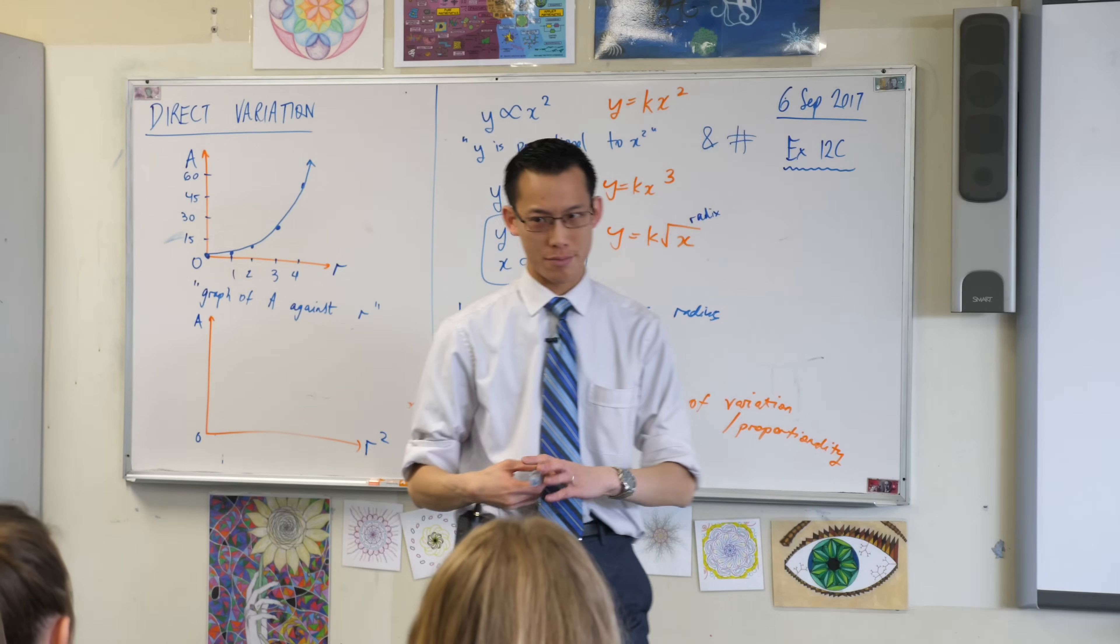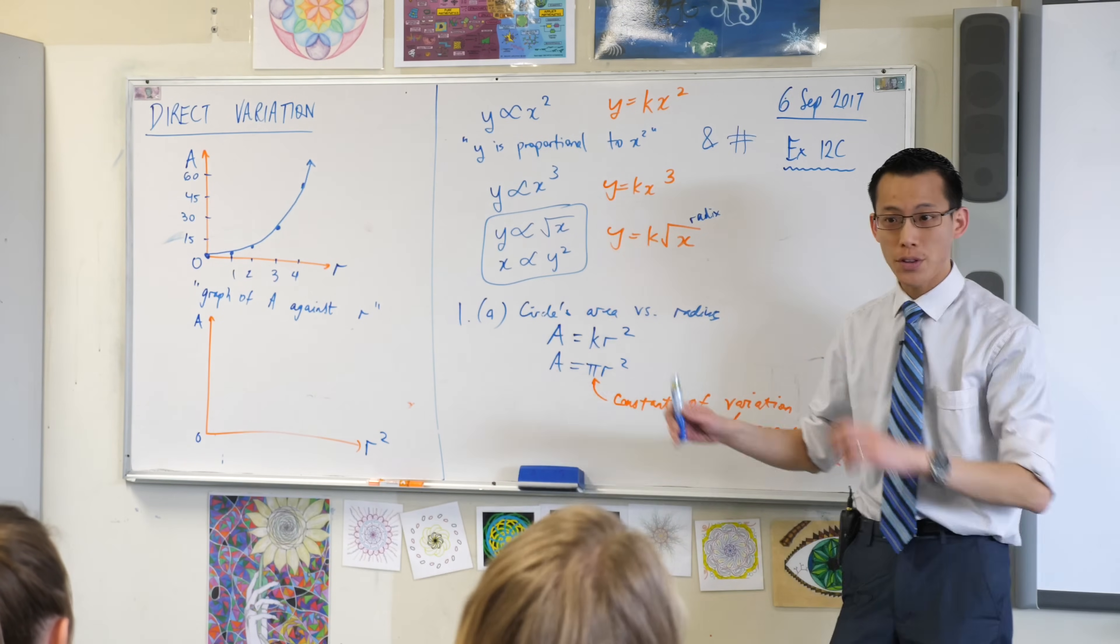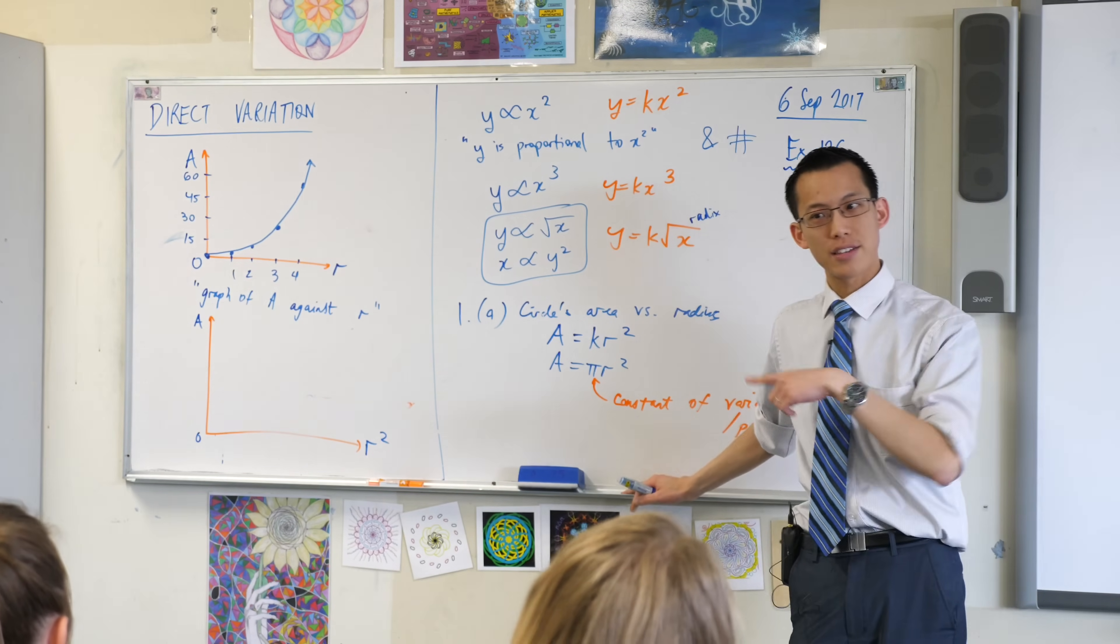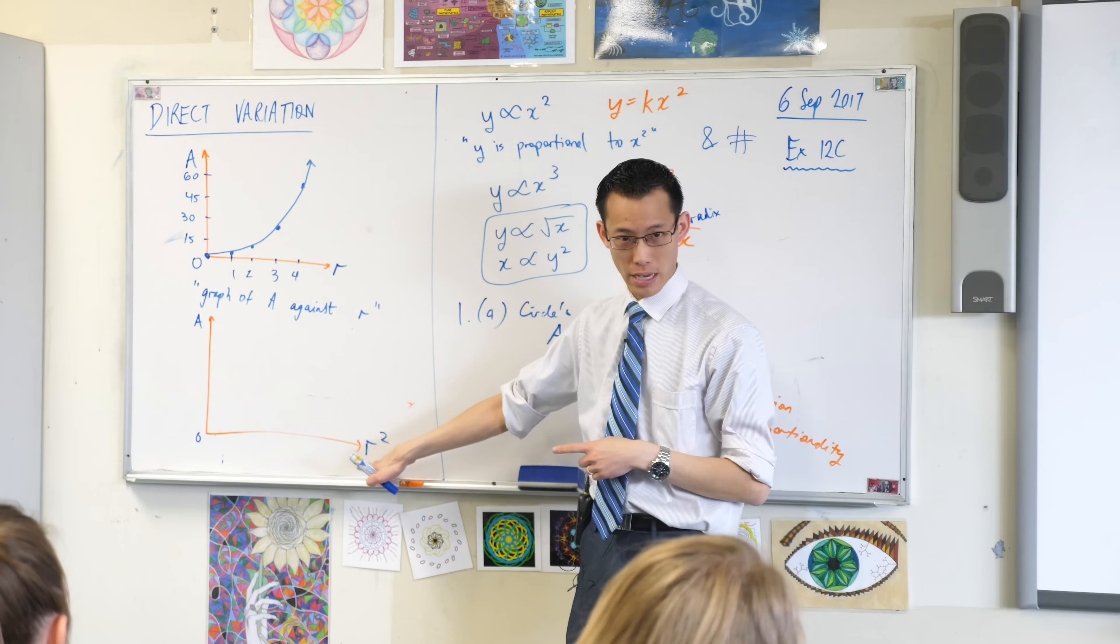So for this new graph here, the horizontal axis needs to be labeled a little bit differently. It'll be r squared.